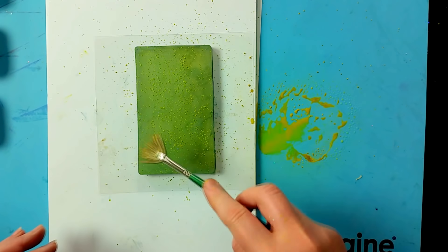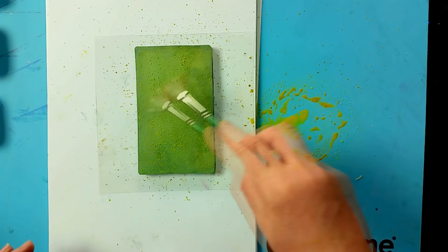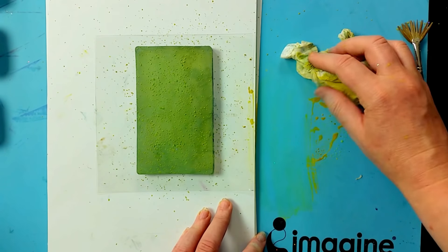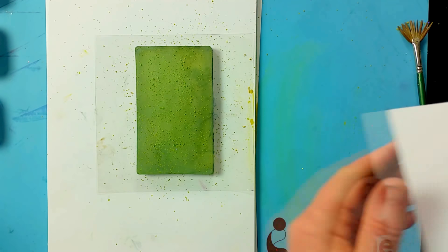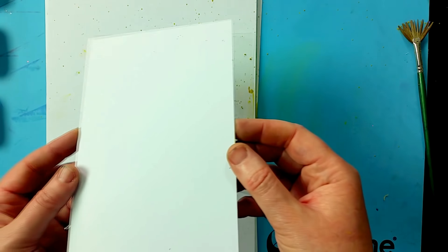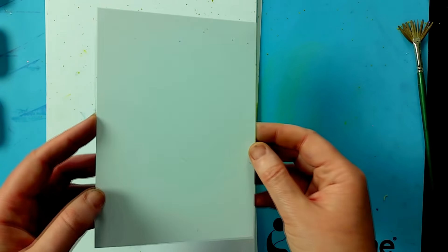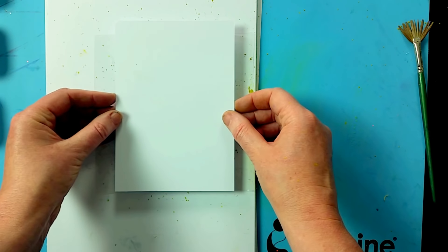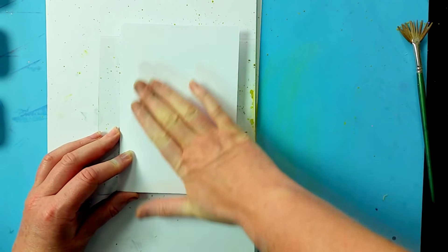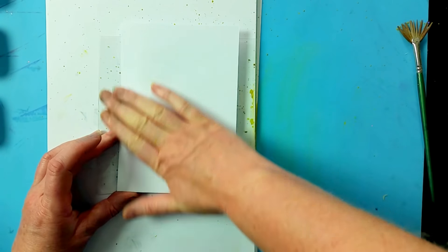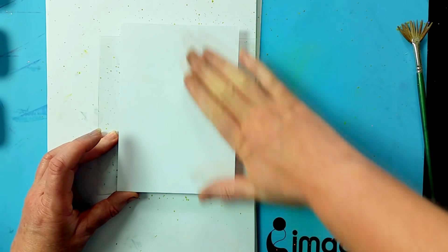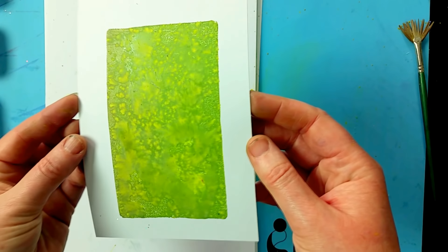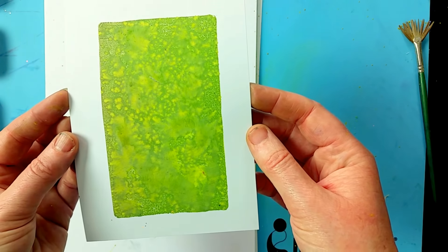This just gives you a really nice effect as you'll see when I take a print now. I'm using some of the multivarious card which we have - it's a really nice, super smooth card, very thick, so it'll take plenty of water. Just line that up, pop it down over the top, smooth over, and there you have your background. Isn't that just so interesting? It looks like a watercolor background.